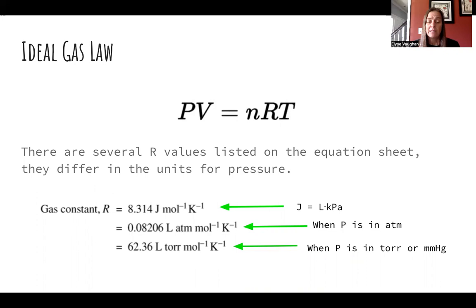One of these R values is in joules per mole Kelvin — that's the 8.314. We'll use that one a lot more when we work with thermodynamics and are working in units of energy, but it is here in our gas equations as well.